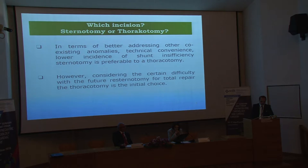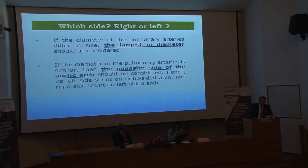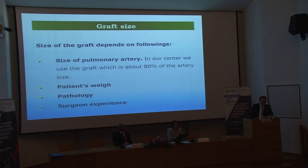Sternotomy is preferable to thoracotomy in terms of better addressing other coexisting anomalies and technical convenience. Regarding the choice of pulmonary artery branch, the largest in diameter should be considered. If the diameter of the pulmonary artery is similar, then the opposite side of the aortic arch should be considered. The graft size depends on the size of the pulmonary artery, patient's weight, pathology, and surgeon's experience. In our center, we use a graft which is about 80% of the artery size.